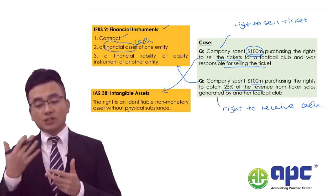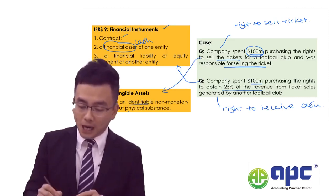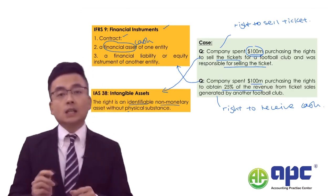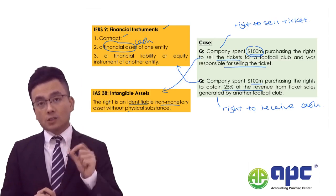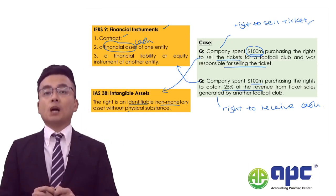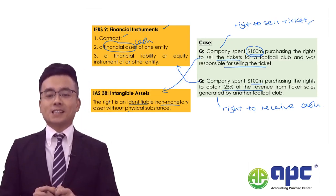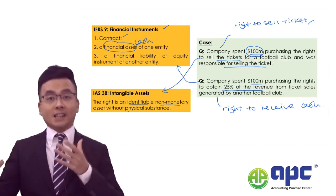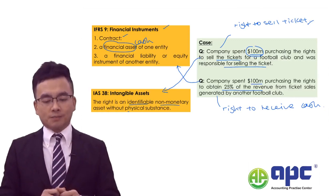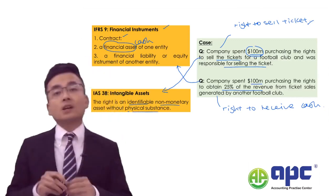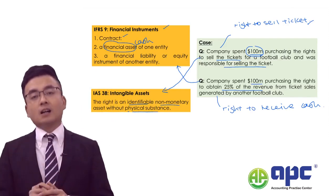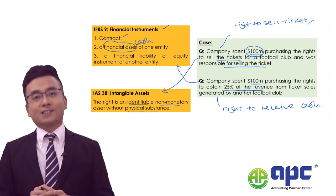The reason is the right to sell tickets will be identifiable — we signed a contract already — and it is non-monetary, meaning it is not the right to receive cash directly but to sell tickets on your behalf. Monetary means we get cash automatically or directly from the right. Of course, it is without physical substance — it is not PPE, property, plant and equipment — so I would rather recognise it as an intangible asset.